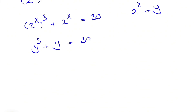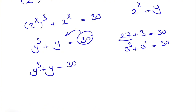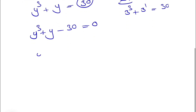Instead of 30, we know 27 plus 3 is 30, and 27 is 3 cubed and 3 is 3 to the 1. So if we bring 30 to the other side, we'll have y cubed plus y minus 30 equals 0, and we change the sign. So we have y cubed minus 3 cubed plus y minus 3 equals 0.